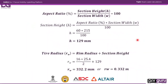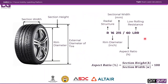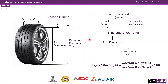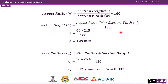We need to find the sectional height, as it is not directly given in the specification. We must calculate it using the aspect ratio formula. Aspect ratio is the ratio of sectional height to sectional width. Rearranging, sectional height equals aspect ratio multiplied by section width divided by 100. Putting in the values — aspect ratio 60 and section width 215 mm — we get a section height of 129 mm.